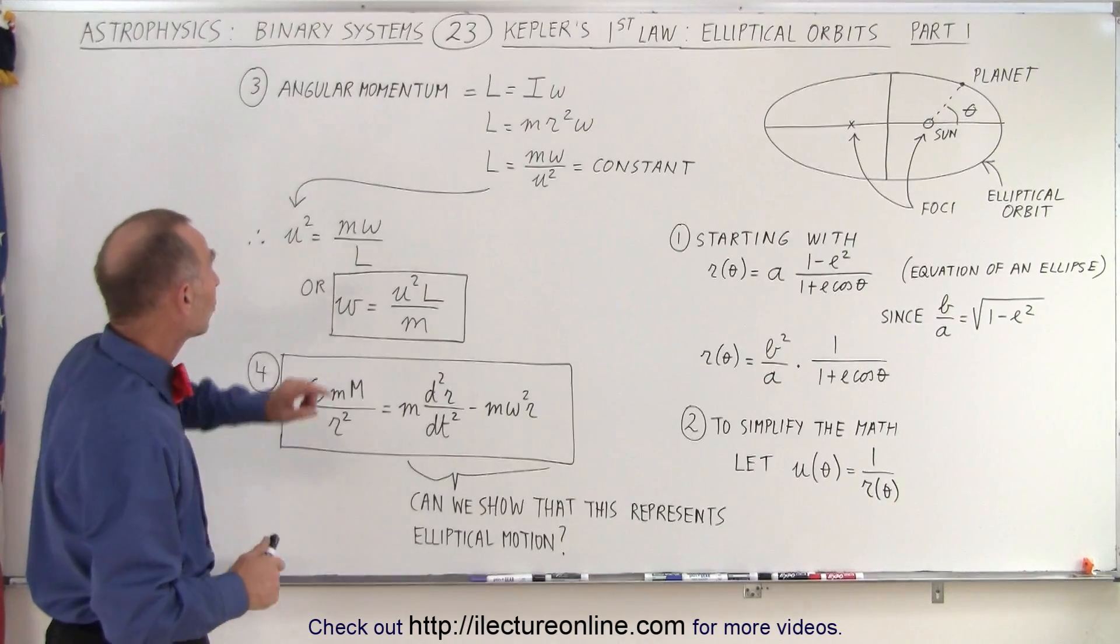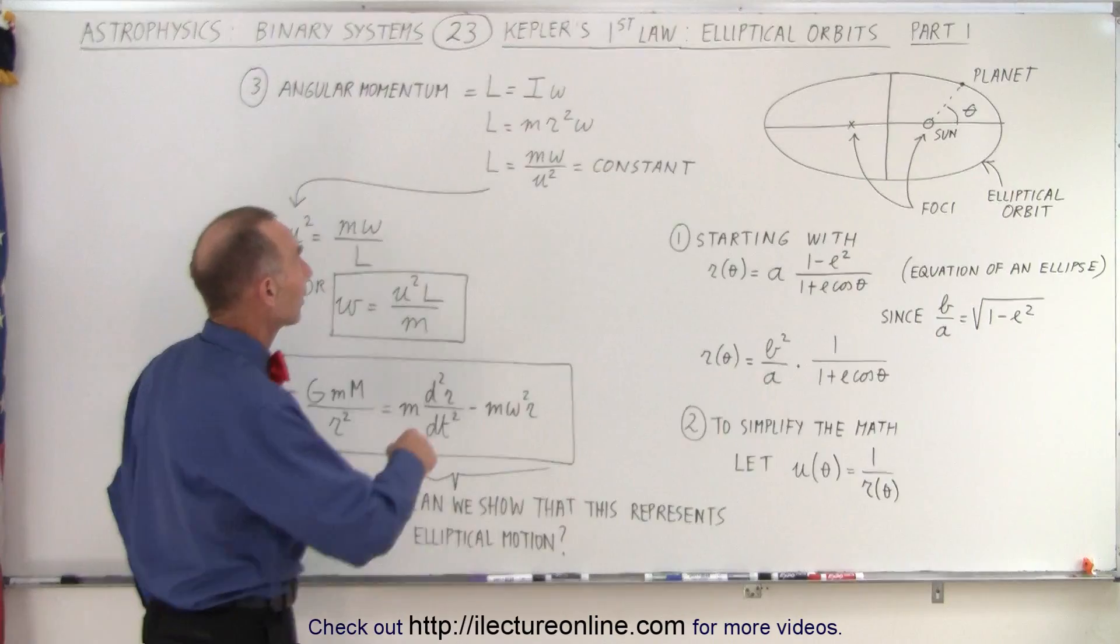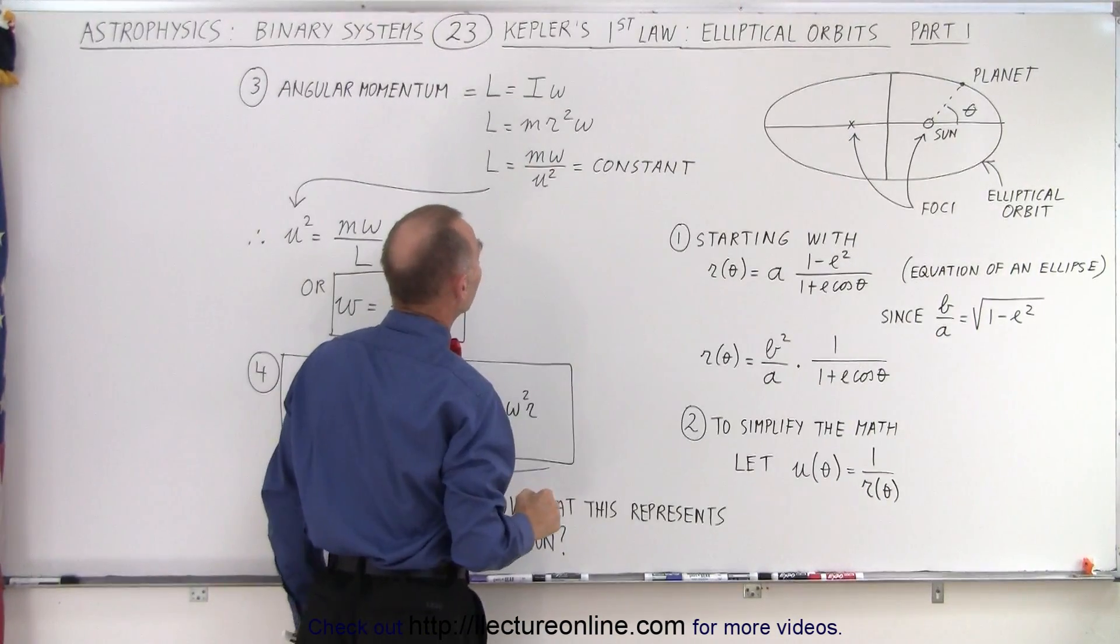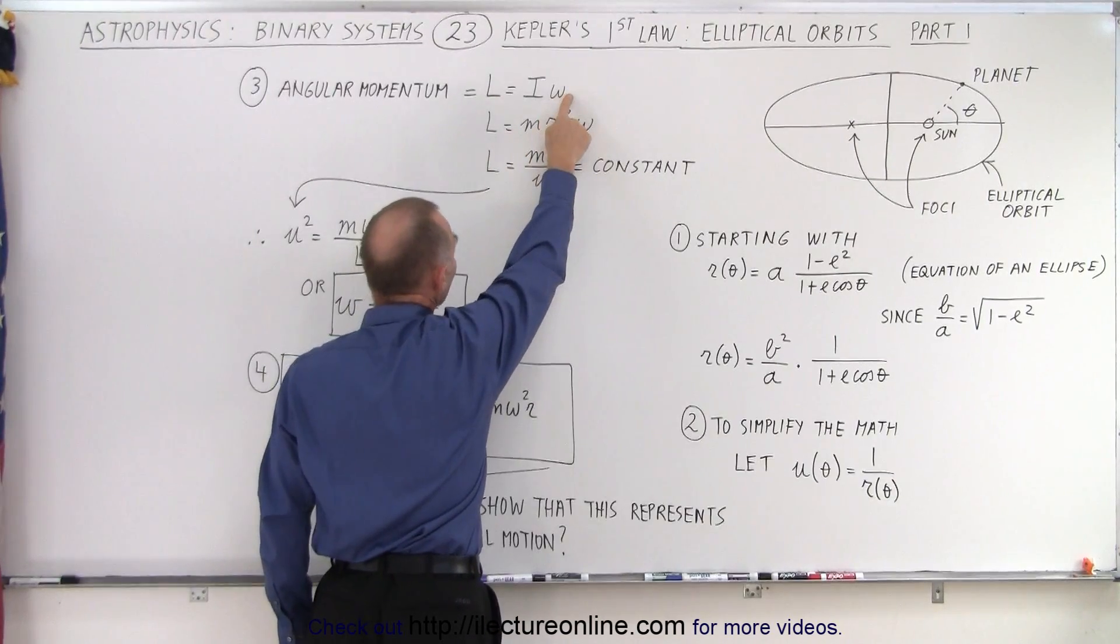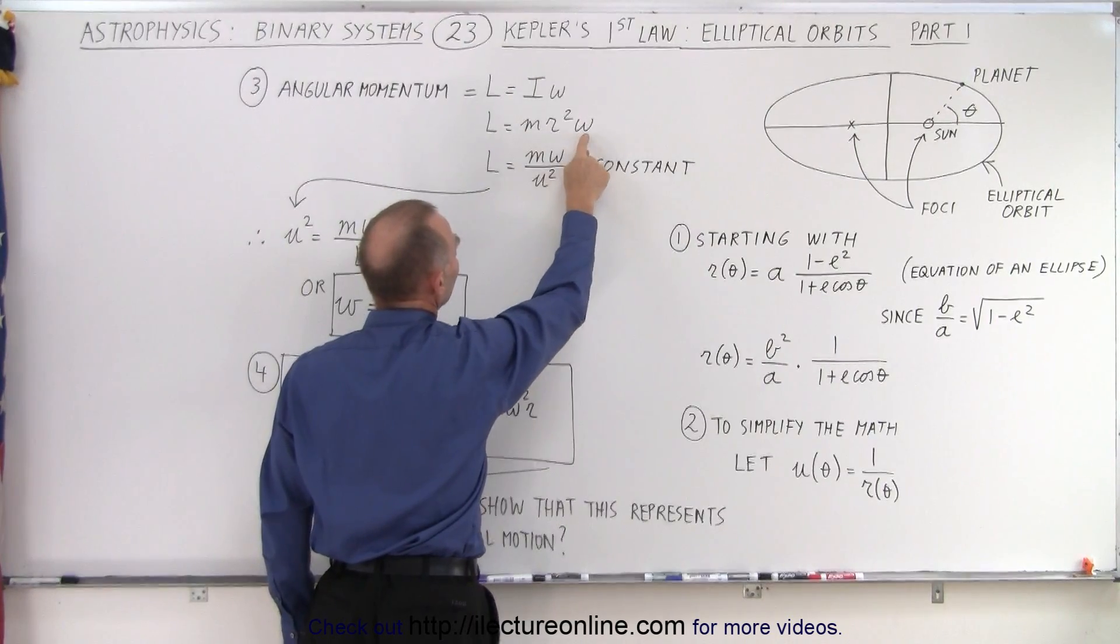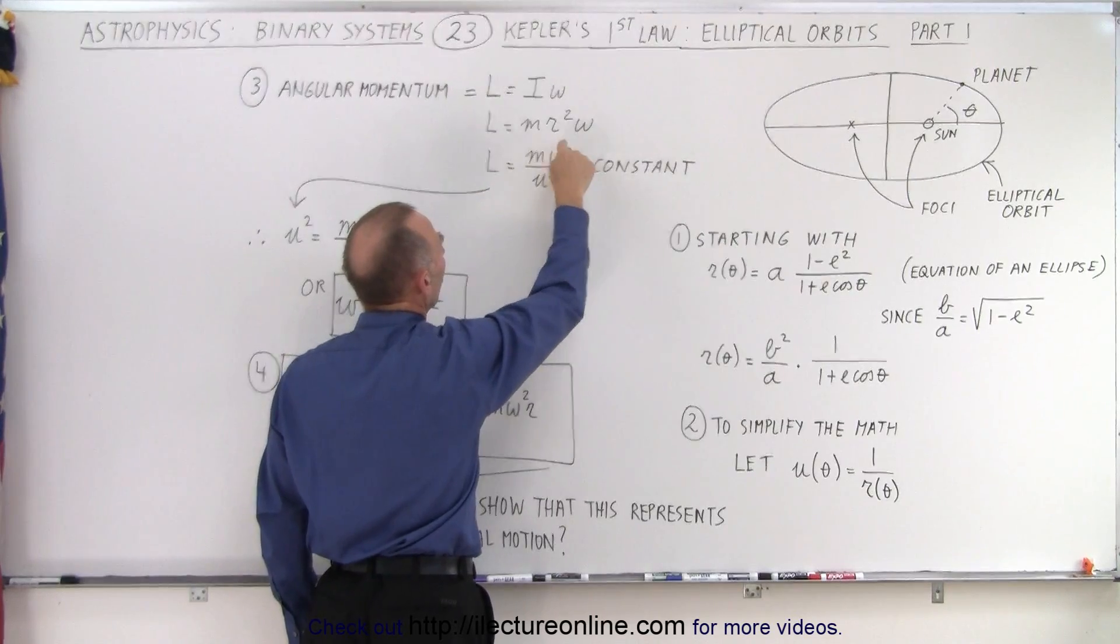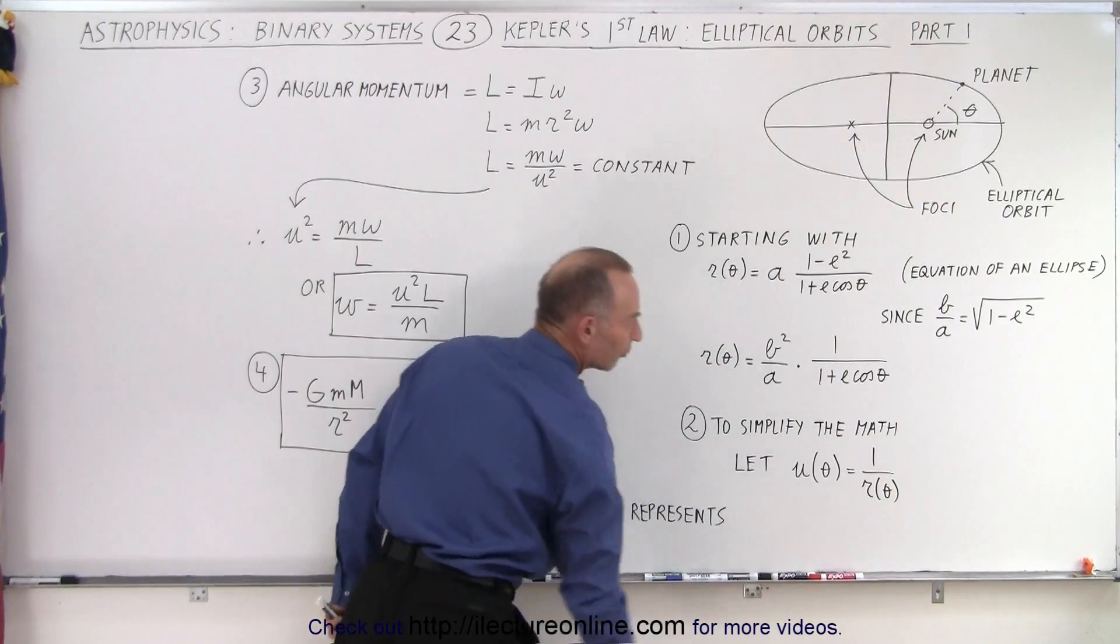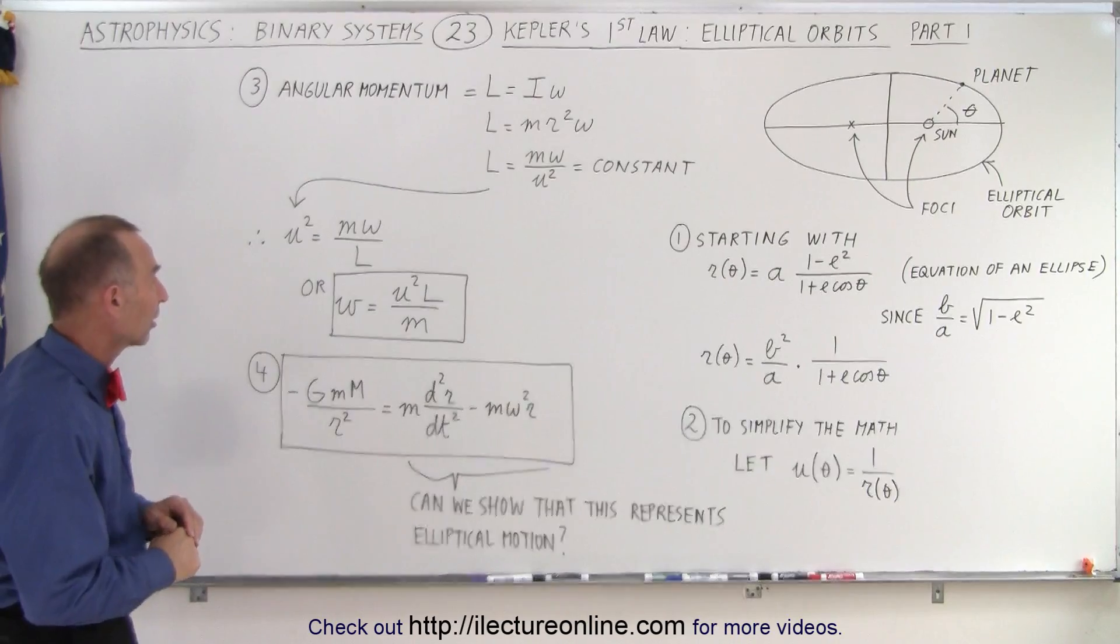Once we've made that substitution, we take a look at the angular momentum equation again. Angular momentum equals the moment of inertia times omega, the angular velocity. For a point object, I equals M R squared times angular velocity. So we can write L, the angular momentum, as M omega over U squared, because we've made the substitution for R. Angular momentum is a constant.